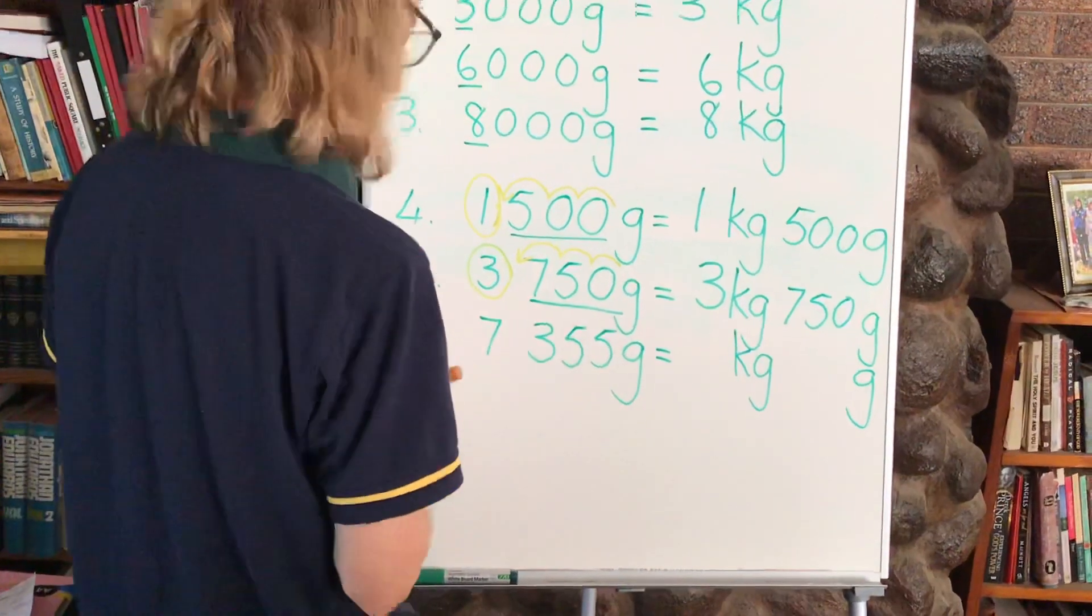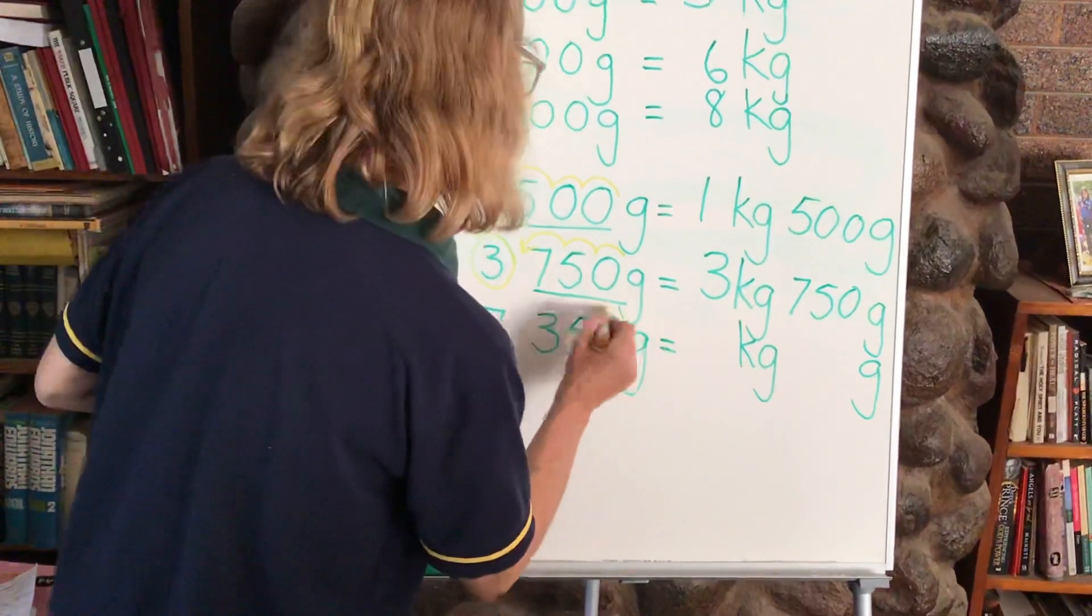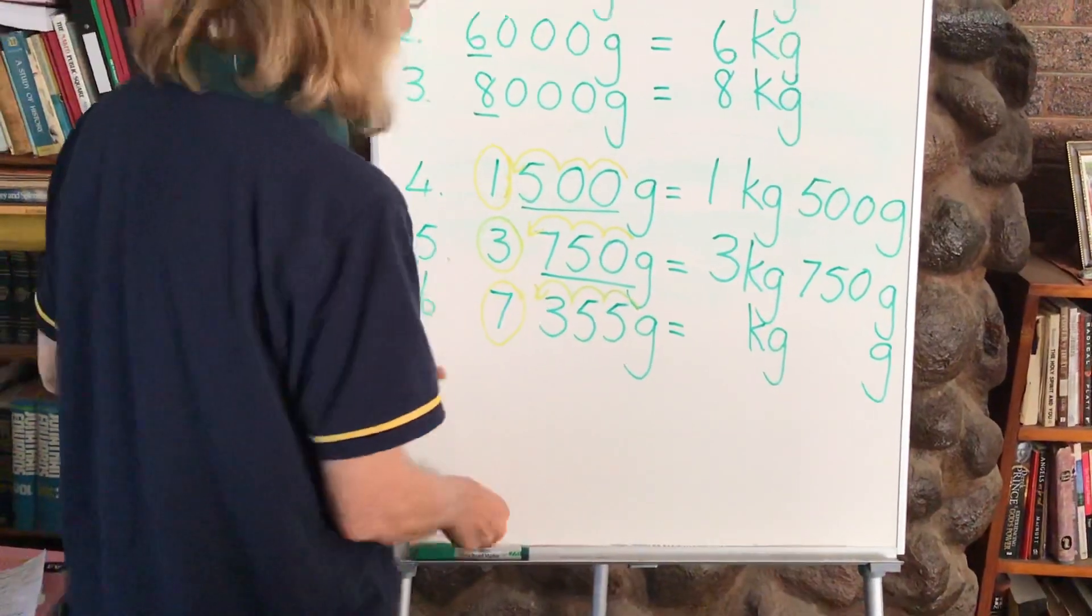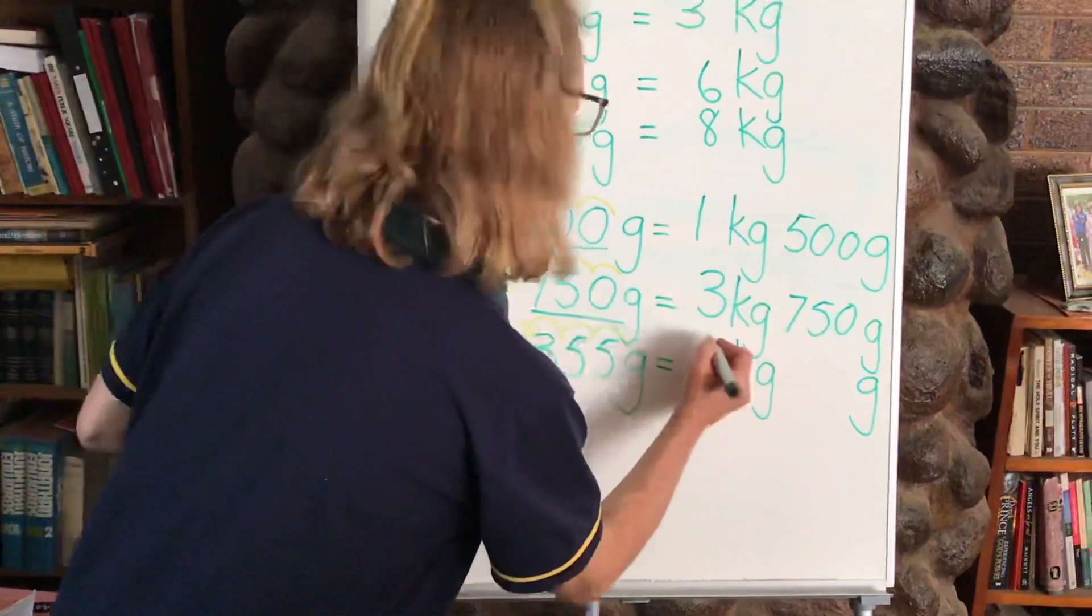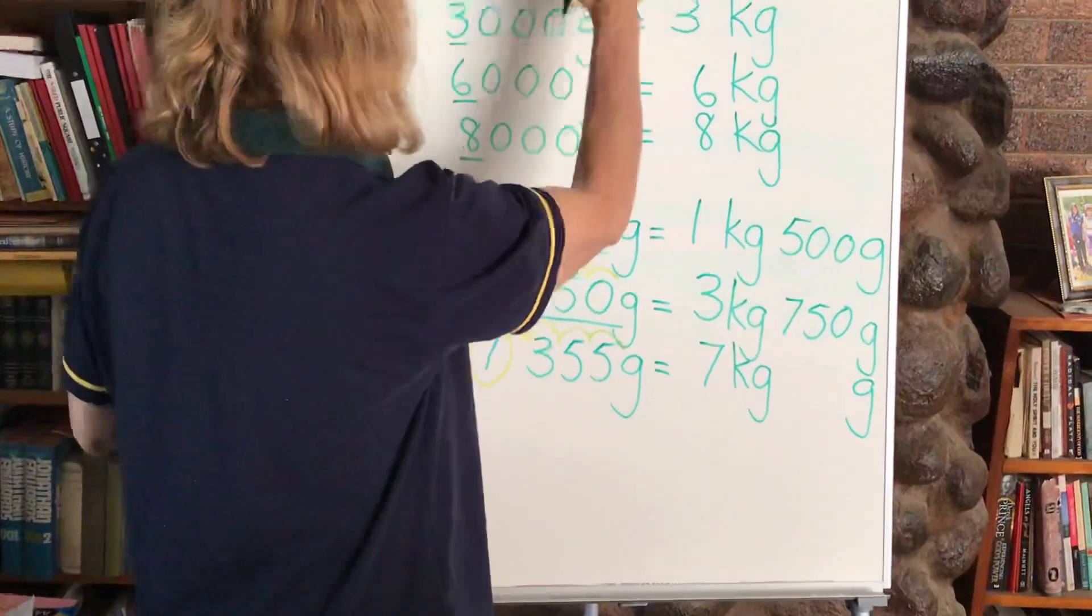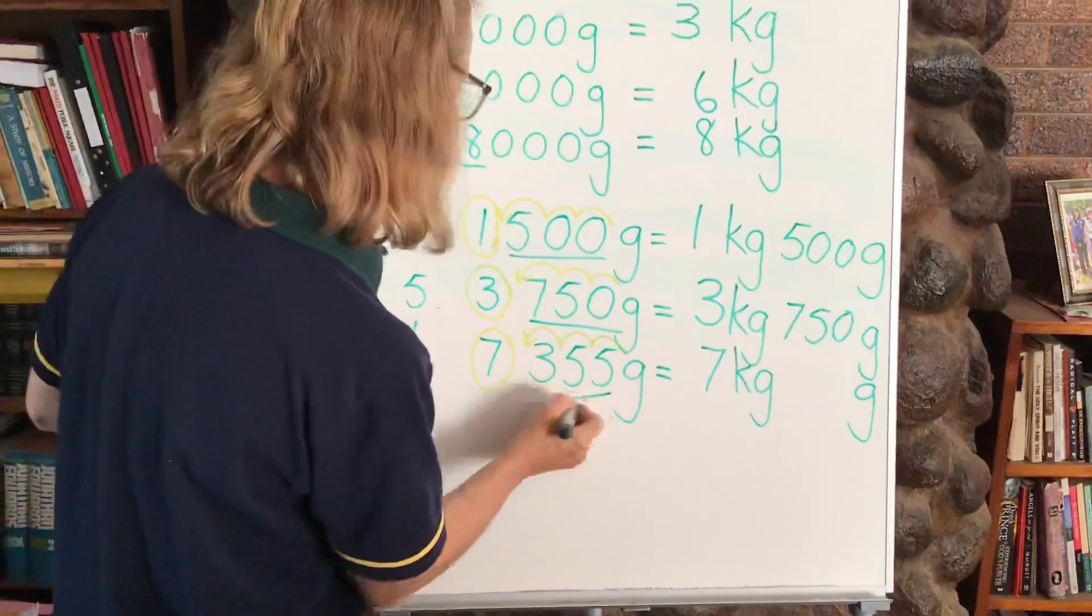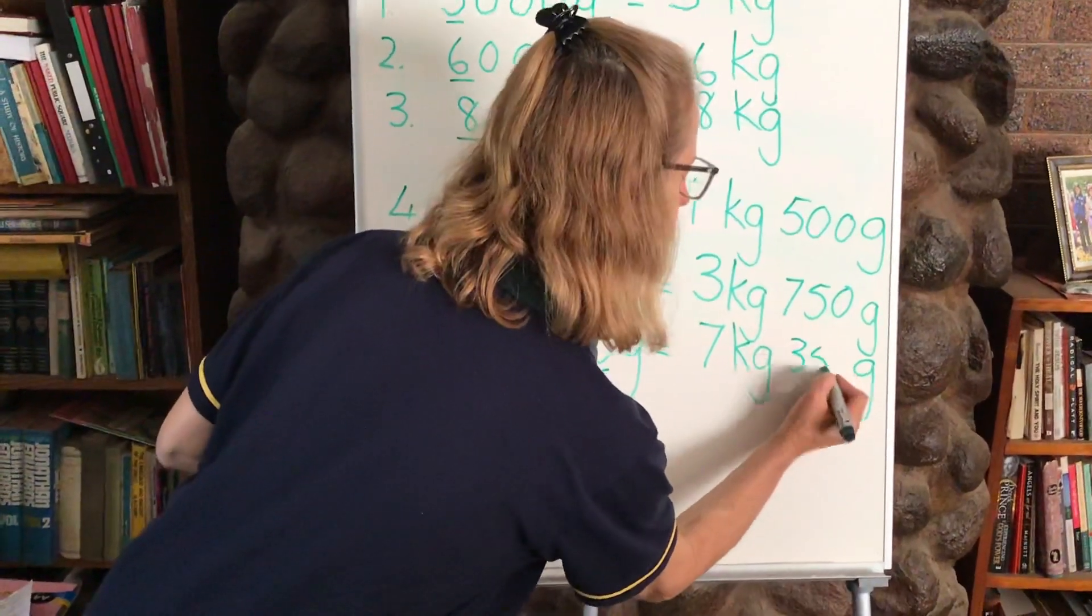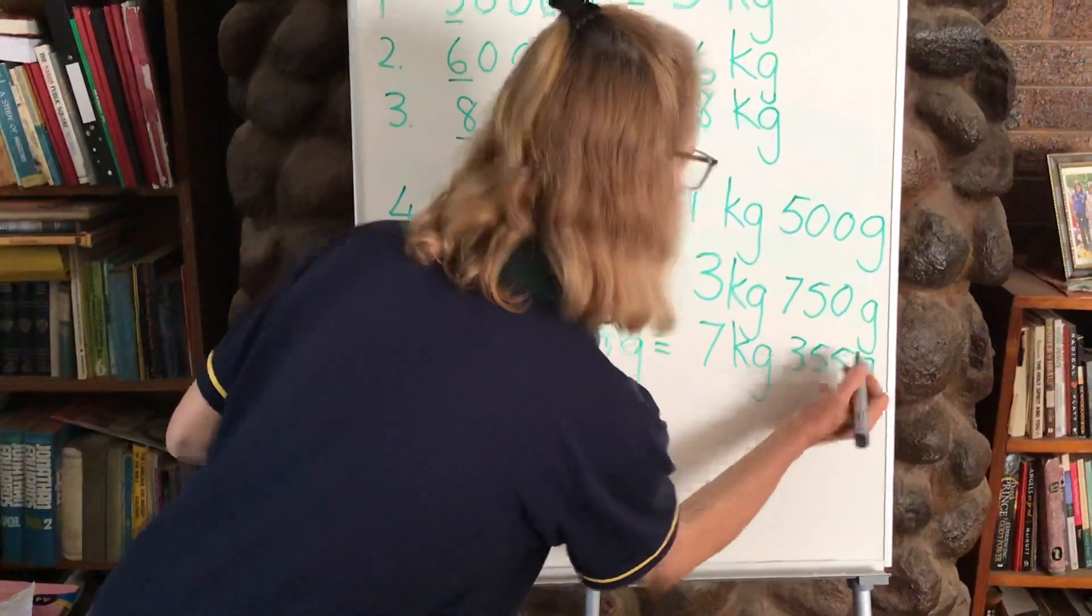The last one, our 3 places, let's count from the right hand side. 1, 2, 3 and it gives us the 7,000 grams. And then we write 7 kilograms because we know that 1,000 grams are 1 kilogram. How many grams are left over? And of course it's 355. And so we simply write 355 grams.